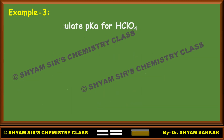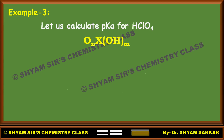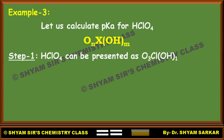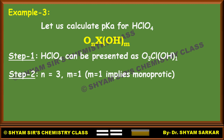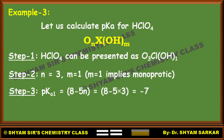Next example: HClO₄. HClO₄ can be represented as O₃Cl(OH)₁. Here N equals 3 and M equals 1, so this is a monoprotic acid — it will have only one pKa value. In Step 3: pKa1 = 8 minus 5 times 3, that is minus 7. So the pKa value is minus 7. In this way you can calculate pKa for any acid very easily.